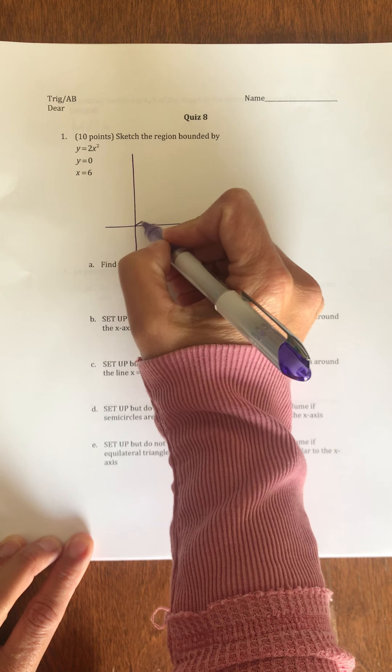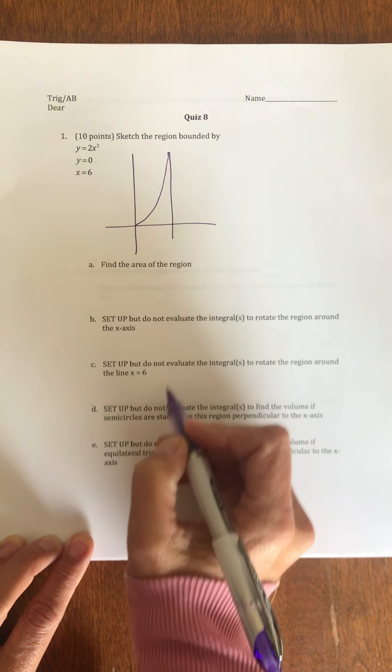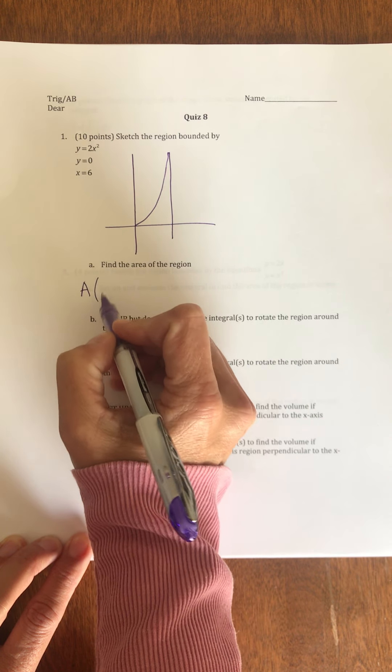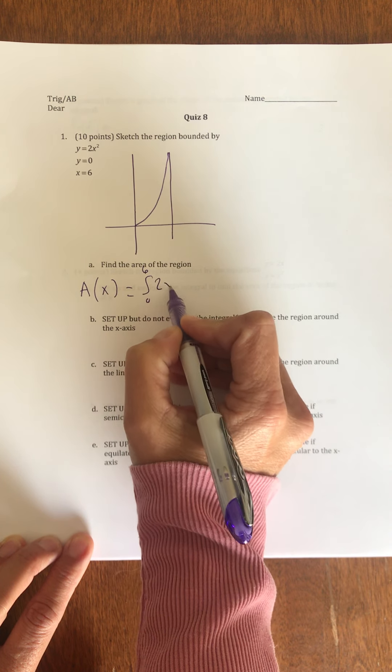So, 2x squared is our parabola, y equals 0, x equals 6, so we're looking at this little sliver right here. To find our area, we're just going to do the integral from 0 to 6 of 2x squared.